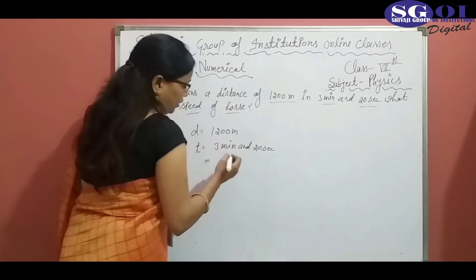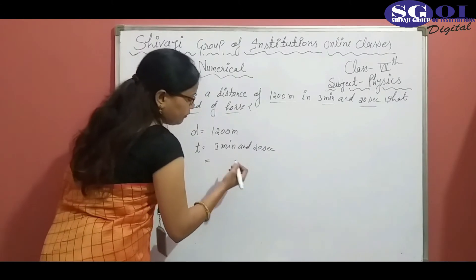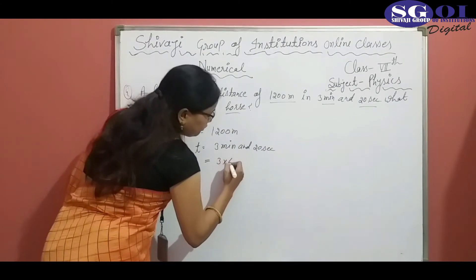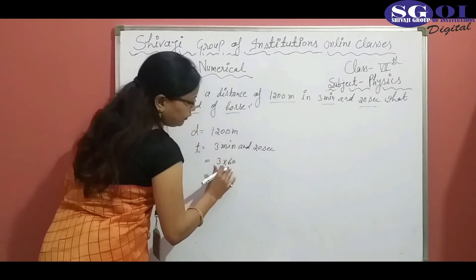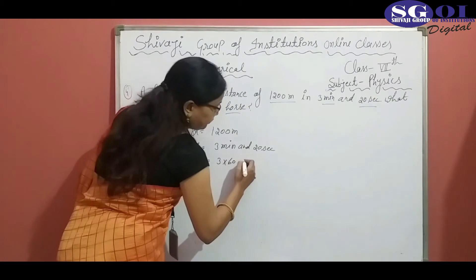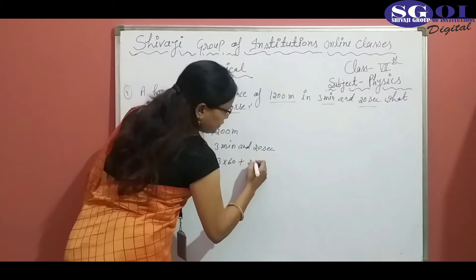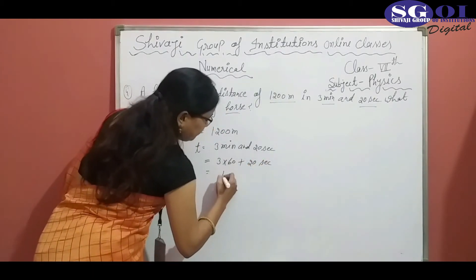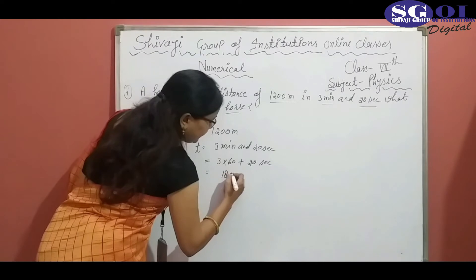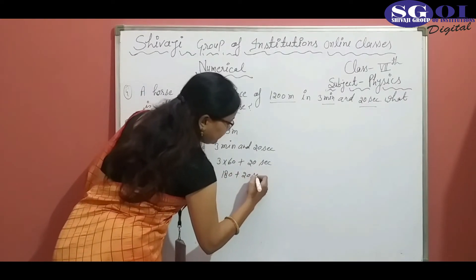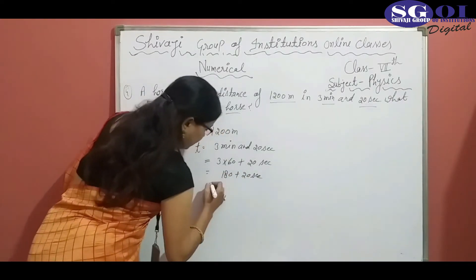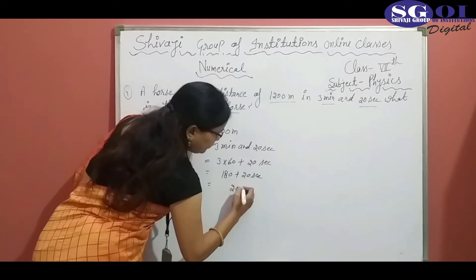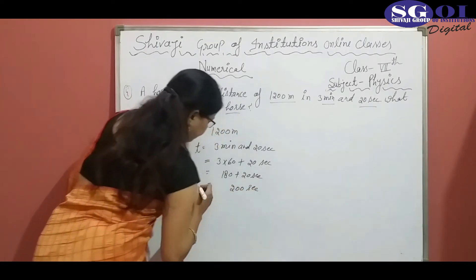So, 1 minute equals 60 seconds. So 3 minutes equals 3 into 60 plus 20 seconds. After multiplying, 180 plus 20 seconds. After adding, we get 200 seconds.